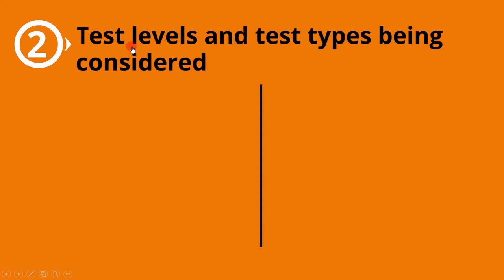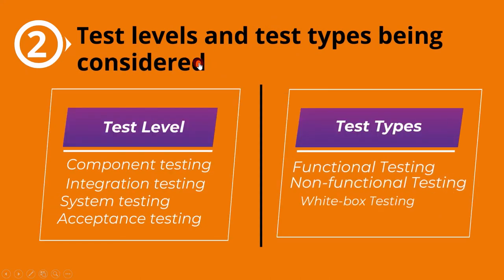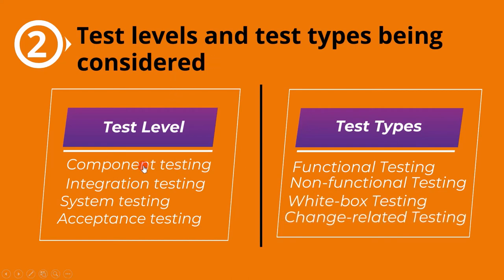The second context is test level and test type being considered. Based on the test level and test type, the test process is selected. The four test levels are component testing, integration testing, system testing, and acceptance testing. The different test types are functional, non-functional, white box testing, and change-related testing. Each of these will be covered in the upcoming lectures.